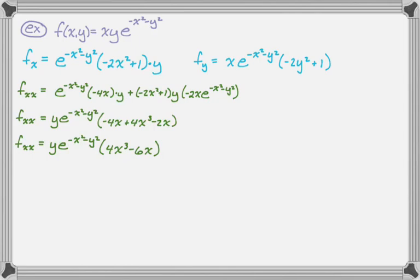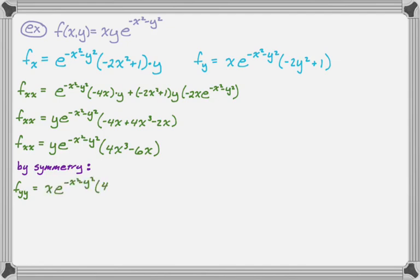This is partial f_xx. And by symmetry — since partial x and partial y are the same function with x and y swapped — I already know what f_yy looks like: it's x·e^(−x²−y²)·(4y³ − 6y). I got that for free, and I'm definitely going to use it.